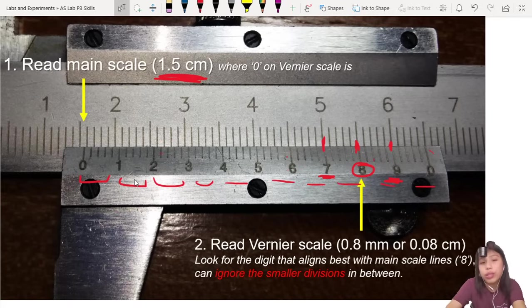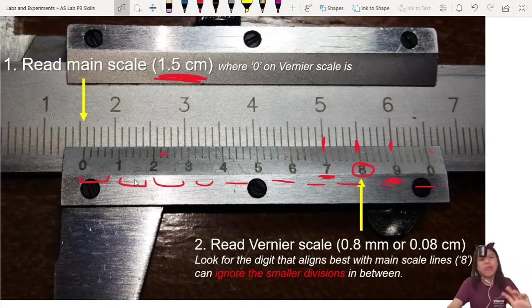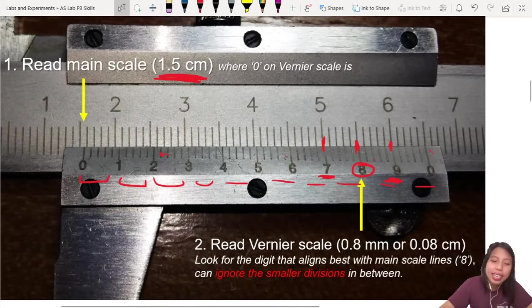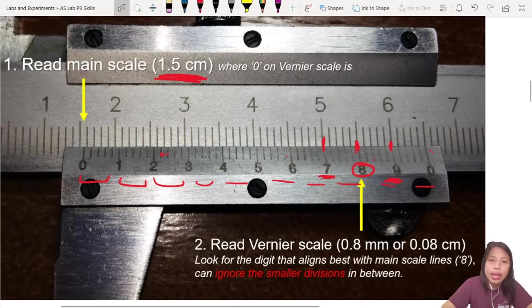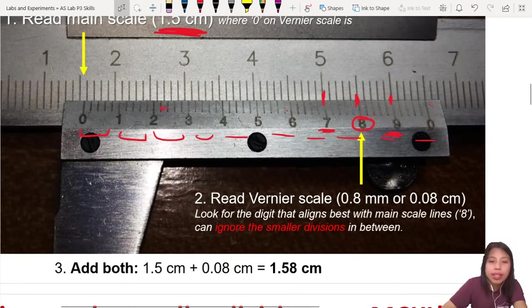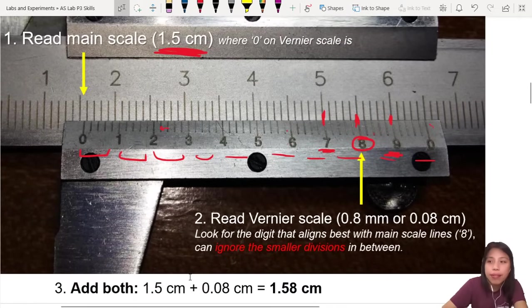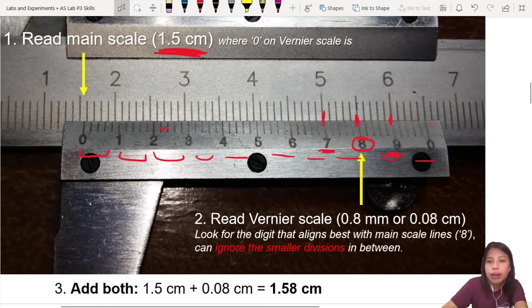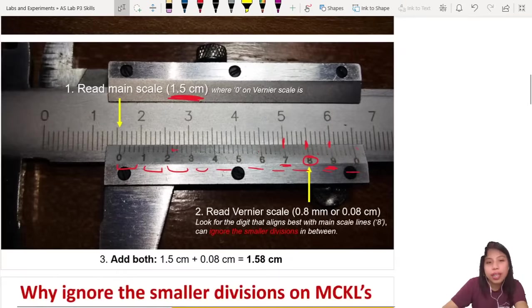We are not using the small division because MCKL scales are extra, a bit more precise, very extra. So 0.8 mm and 1.5 of the main scale. So what you do is, you take 1.5, add the vernier scale down there, which one align with the top. And that's your reading.